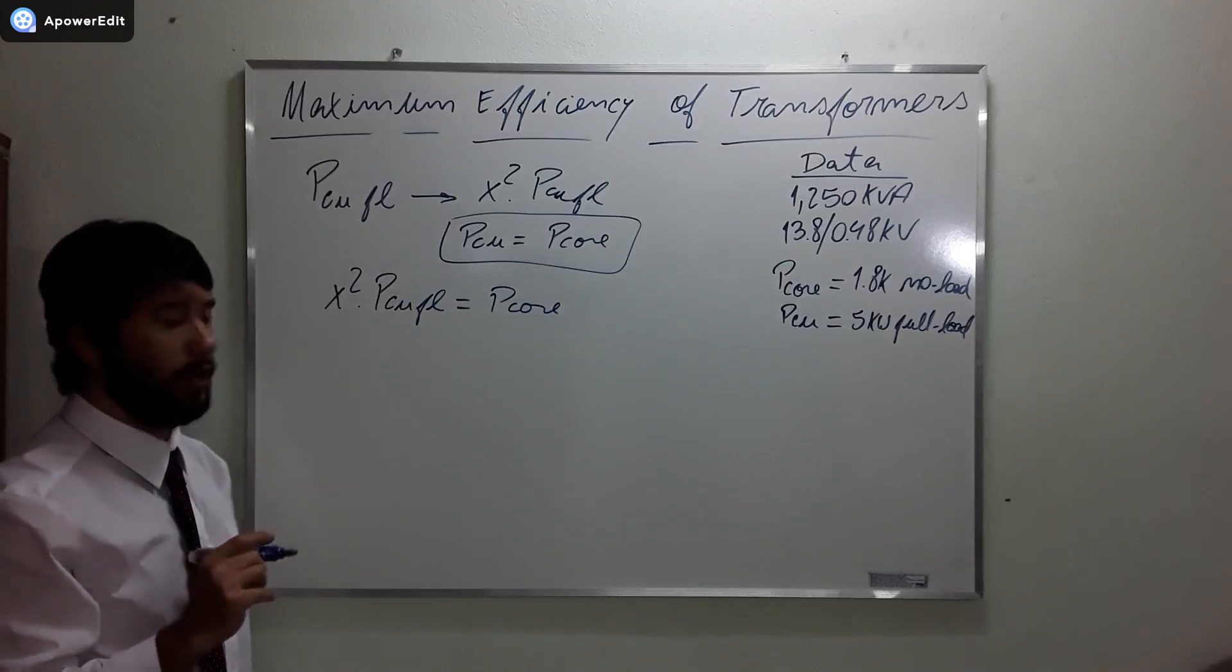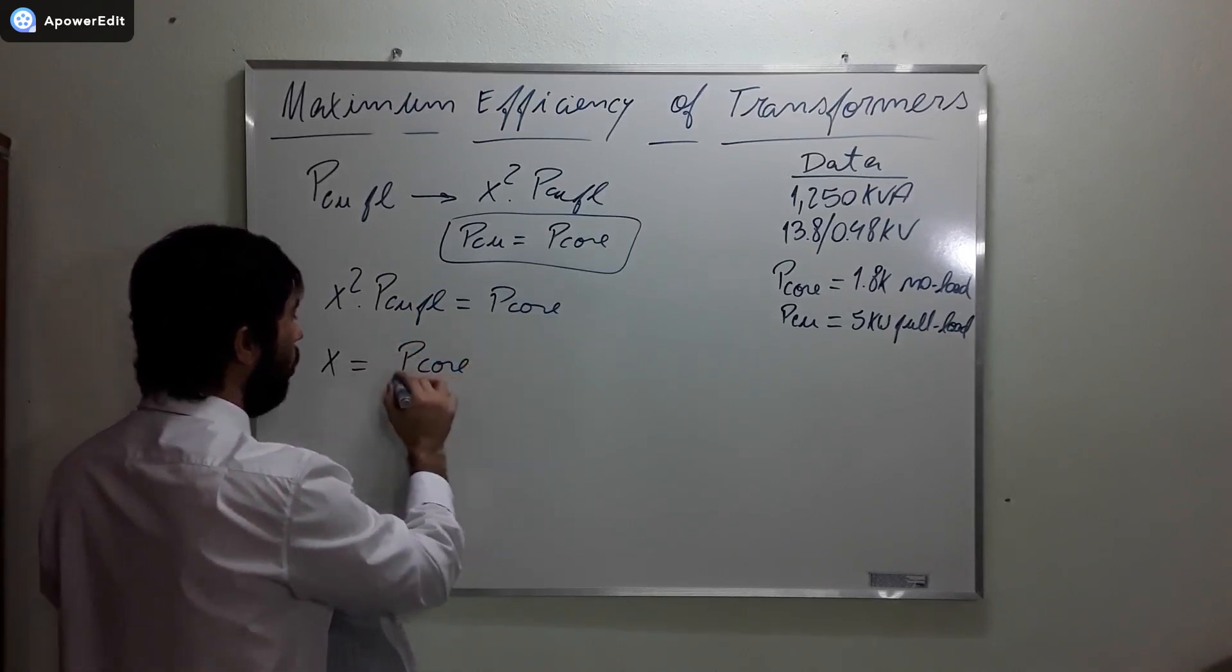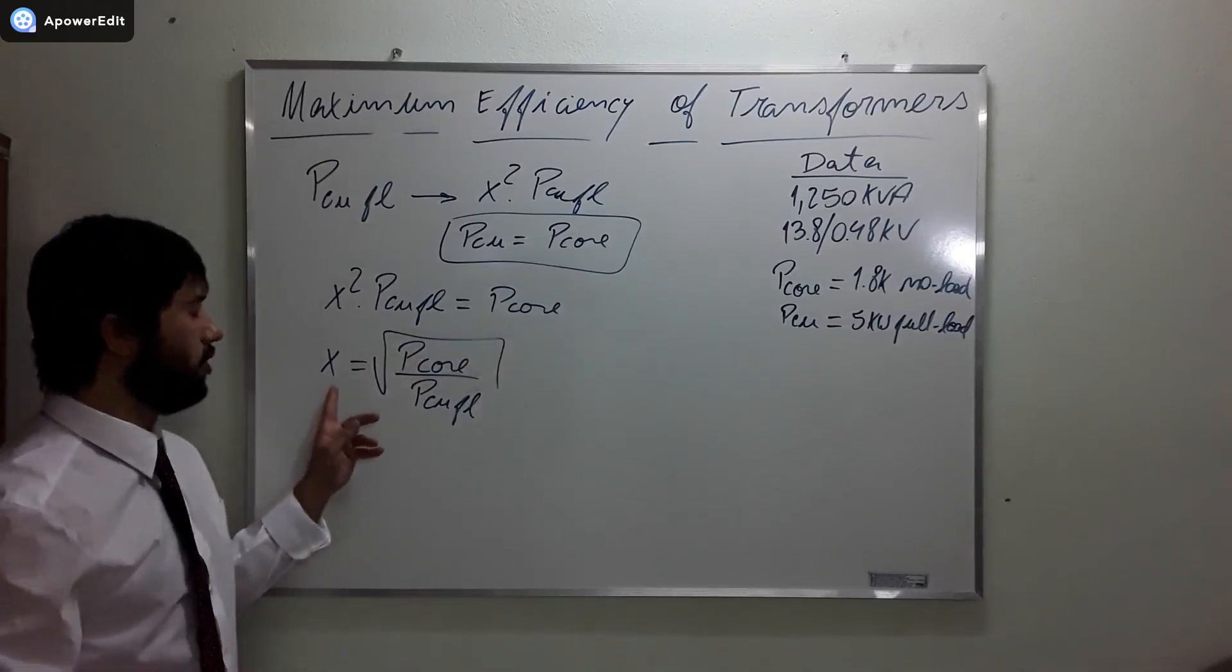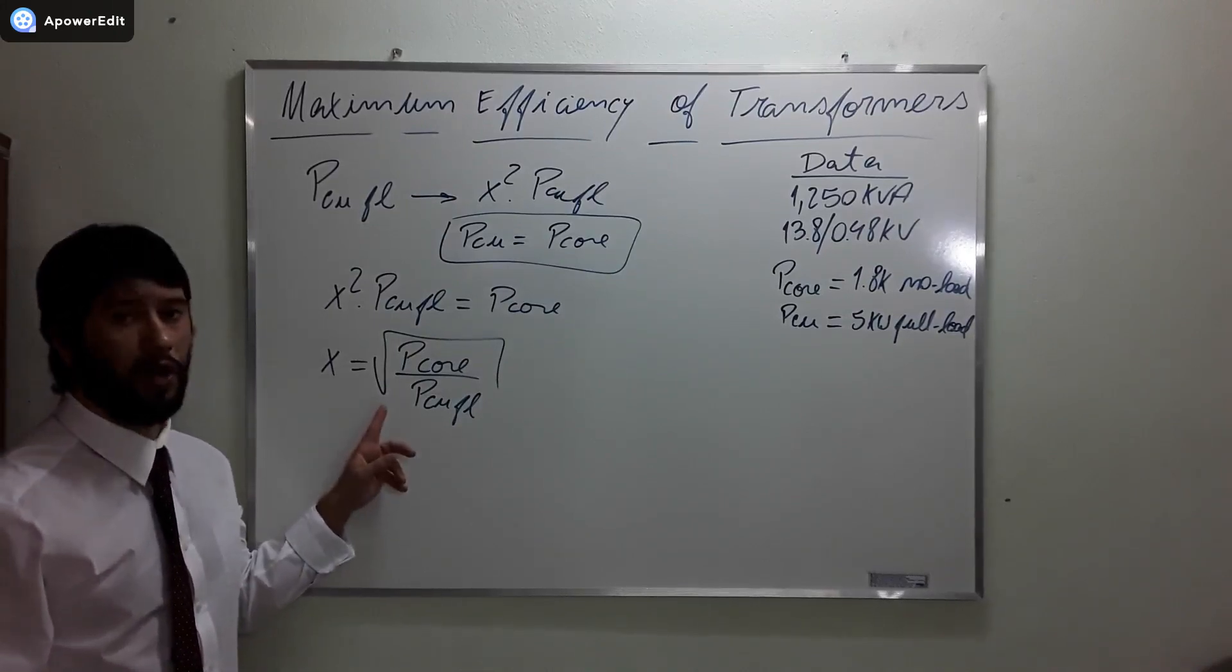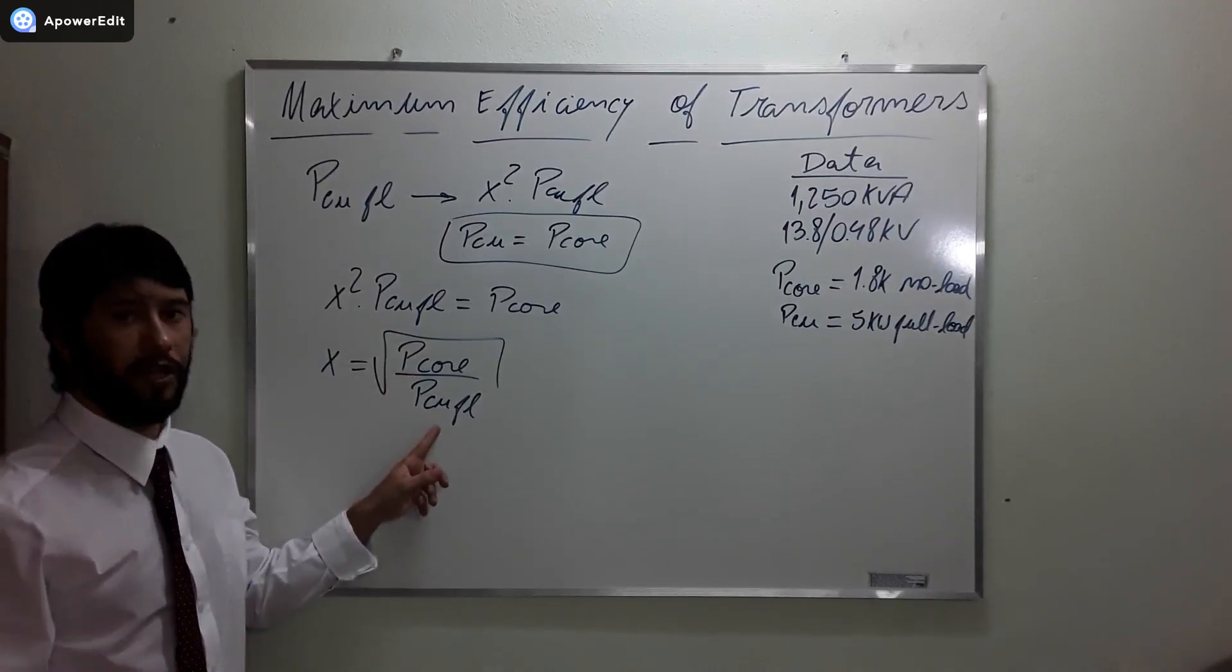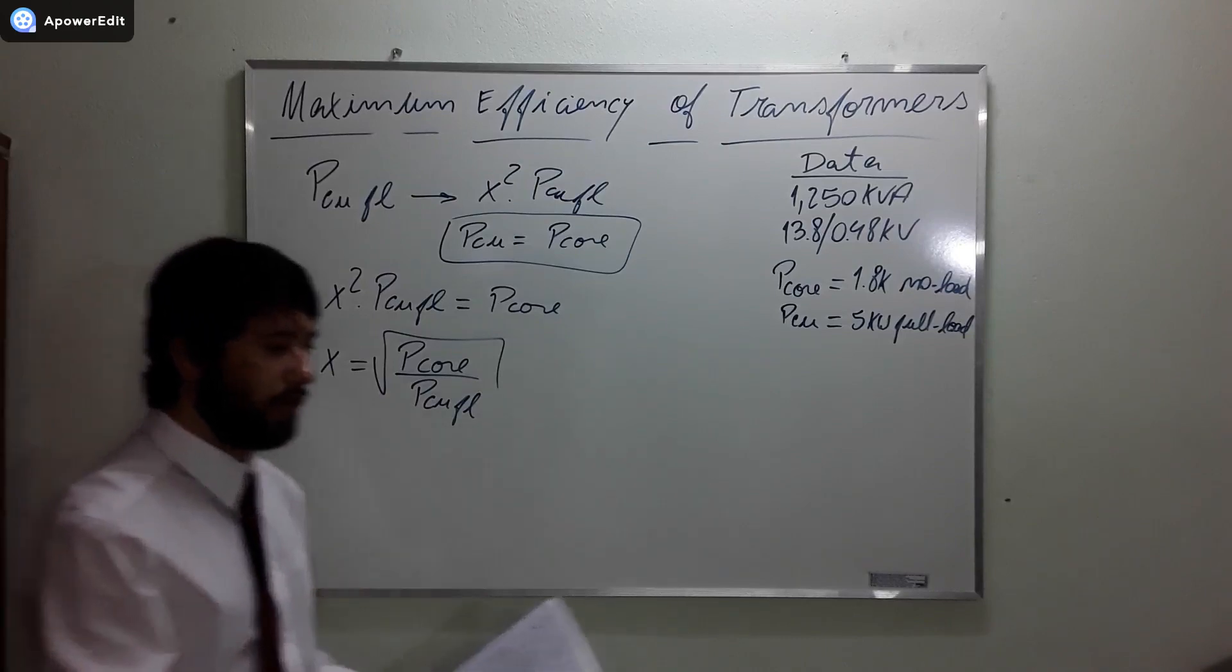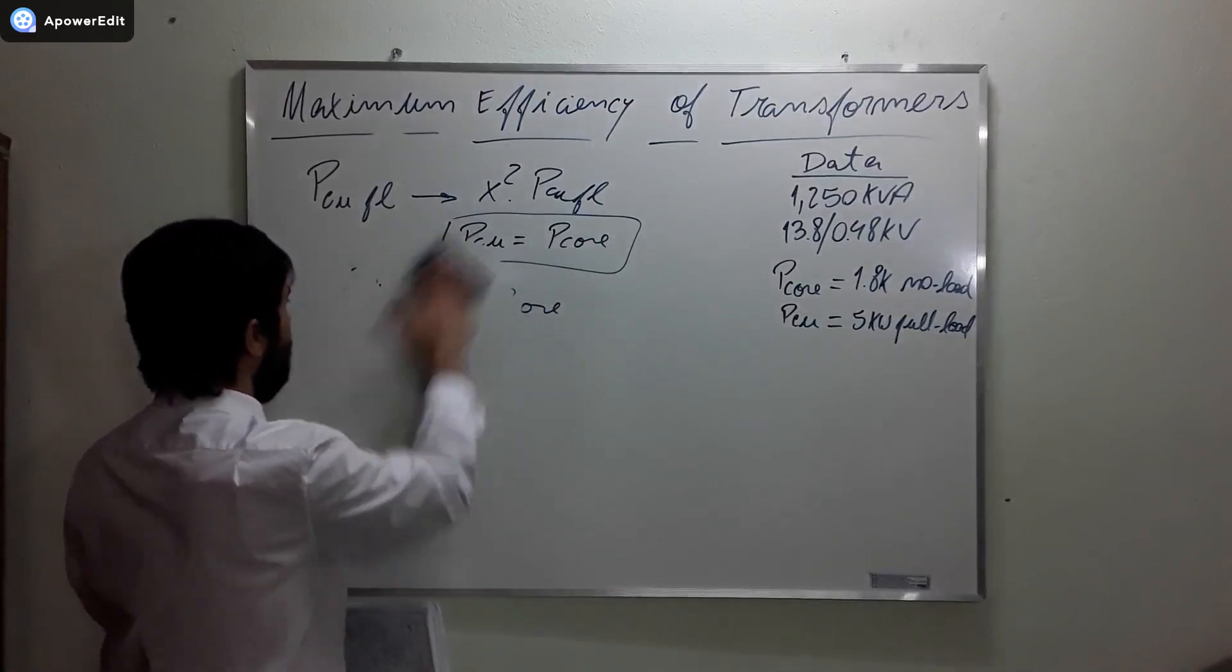Ultimately, we are going to reach that x is going to be equal to Pcore over PCUFL, the square root of it. So this factor here, the x factor is equal to the square root of the ratio between the losses in the core and the losses in the copper wires at full load. How do we use it? I am going to write an expression and you are going to see what I mean by this.